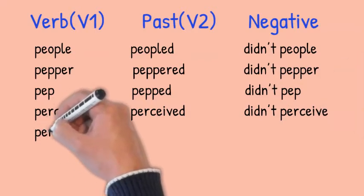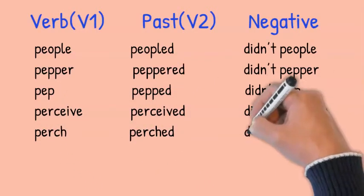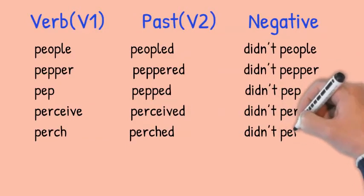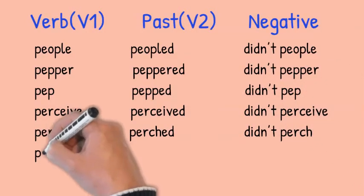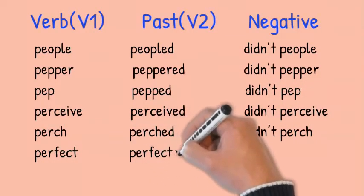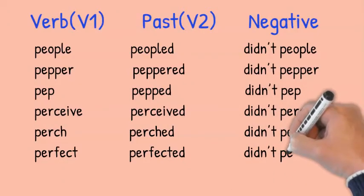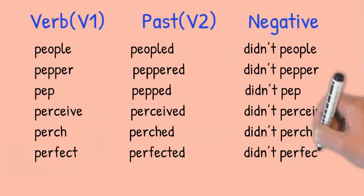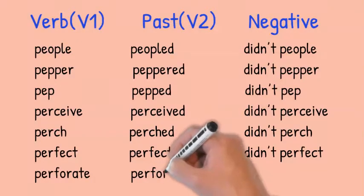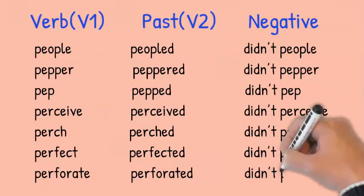Purge, purged, didn't purge. Perfect, perfected, didn't perfect. Perforate, perforated, didn't perforate.